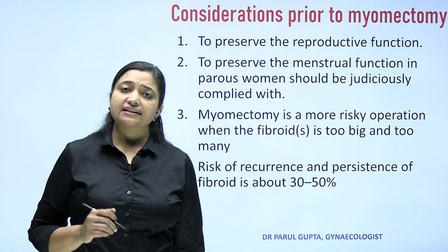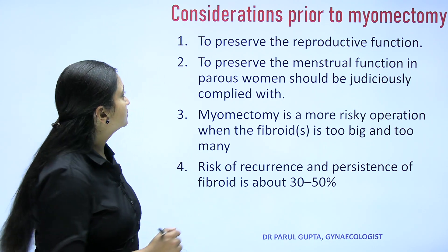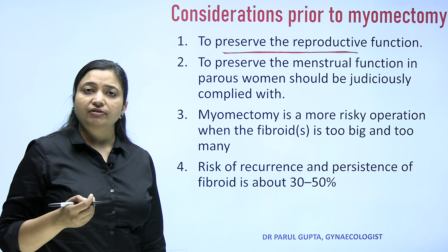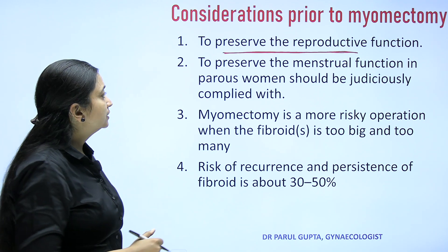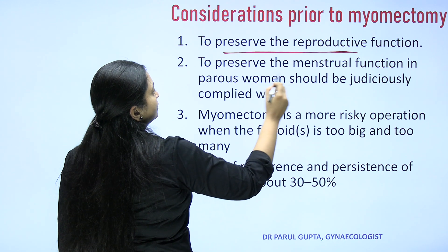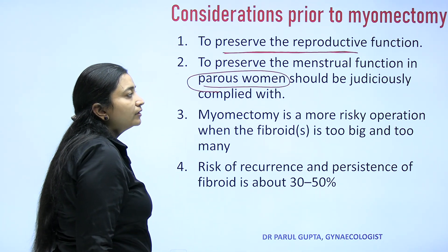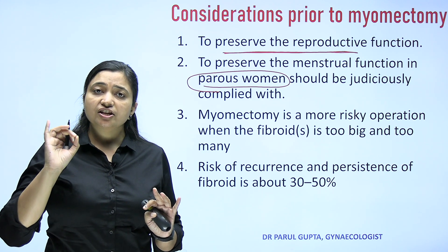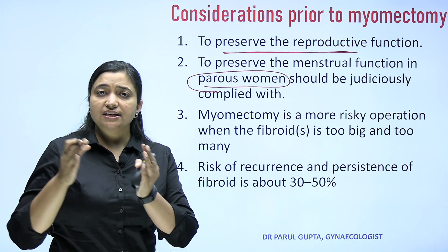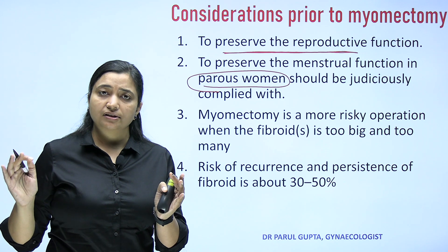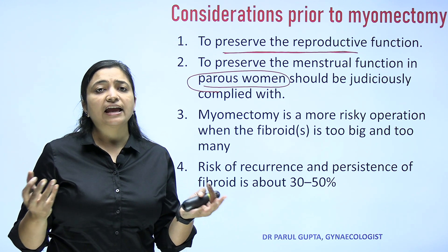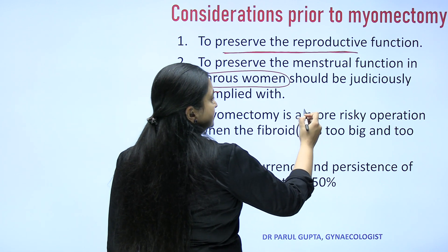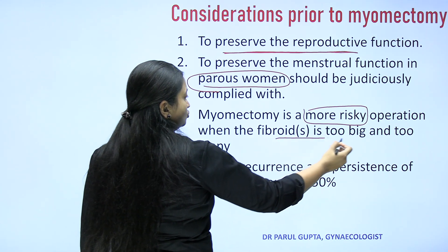Considerations prior to myomectomy: we preserve the reproductive function of the uterus — if the patient was unable to conceive because of the fibroid, we remove it to restore a normal uterine cavity. To preserve menstrual function in a parous woman, you must counsel her carefully about the advantages and disadvantages: removing the fibroid allows normal menstrual function, but there is risk of recurrence, and in some cases heavy bleeding may continue even after removal.